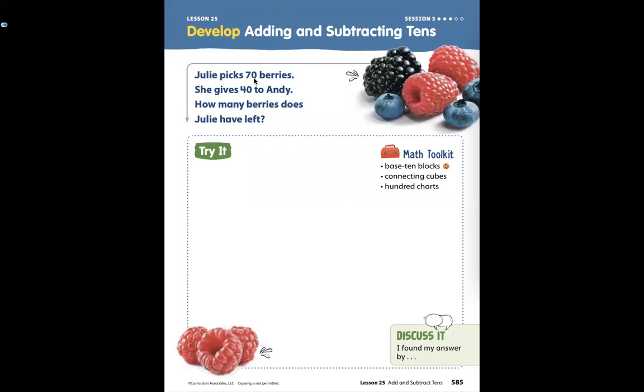Lesson 25, Session 3, page 585. Julie picks 70 berries. She gives 40 berries to Andy. How many berries does Julie have left? Let's think about that again. Julie picks 70 berries. She gives 40 berries to Andy. How many does she have left?